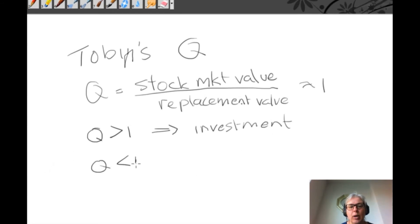Likewise, when Q is less than one, then replacement value is more than the stock market value. So there's no incentive for you to go out and buy an investment good and put it into capital goods in a company. And in fact, in extreme forms, this could lead to asset stripping, where the replacement value is greater than the stock market value. So you buy a company, you strip its assets out, sell them separately, and you make more money.